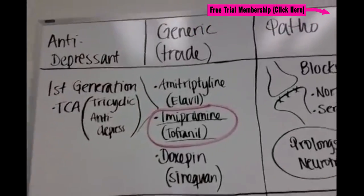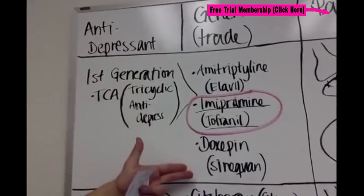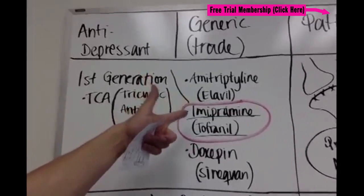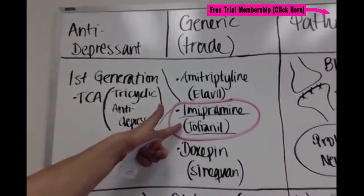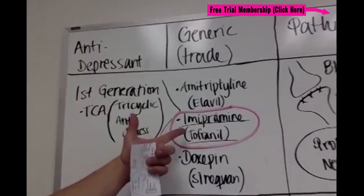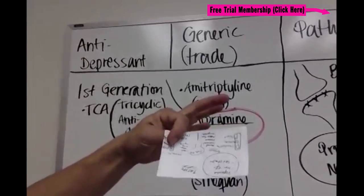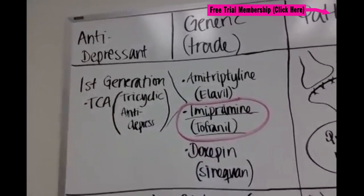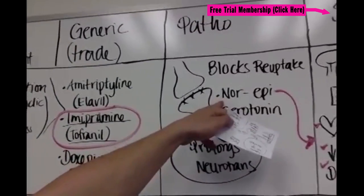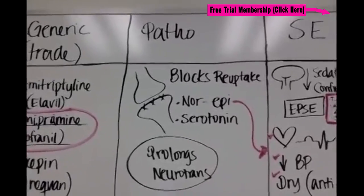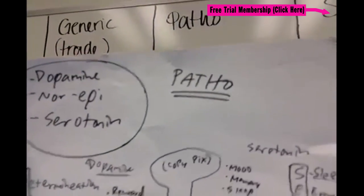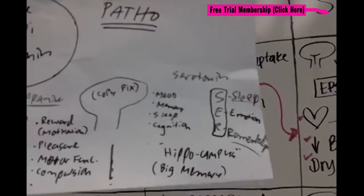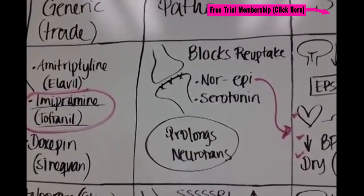Go ahead and pause the video to write down the names of the most common TCAs you'll be tested on and see in the clinical setting. Next, I recommend writing down on a note card your patho: dopamine, norepinephrine, serotonin — use the little acronyms DOPE and SER. The more you go over this, the more it'll make sense.